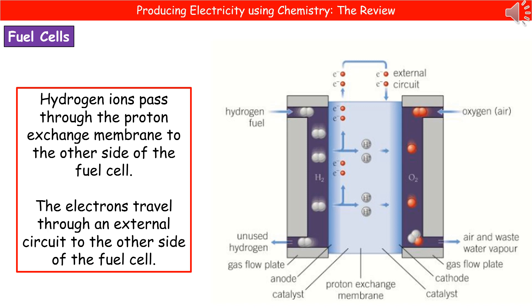The electrons travel through an external circuit which you can see as they move up there, they're going through the external circuit to the other side of the fuel cell. So they don't go through the proton exchange membrane, they're taken through an external circuit and they can power any components attached as they travel through.